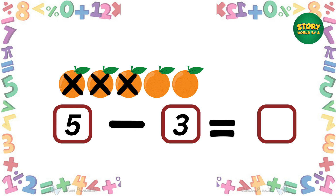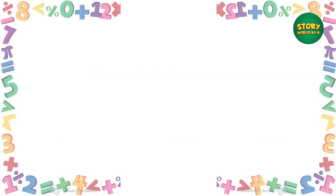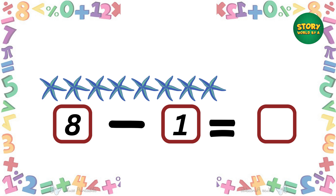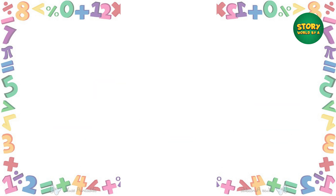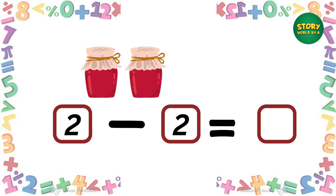If we have five oranges and we give three to a friend, how many are left? Yes, two oranges! If we have eight jellyfishes and we give one to a friend, how many are left? Yes, seven — well done!